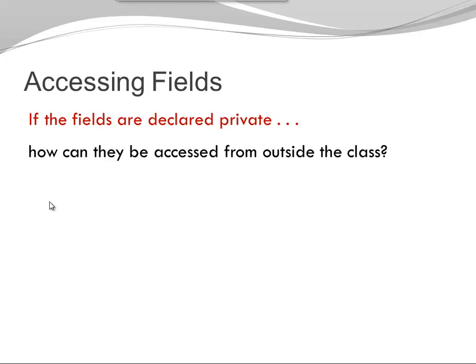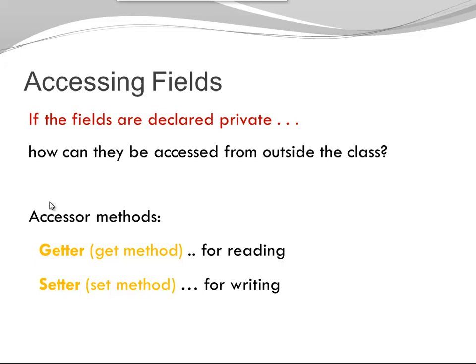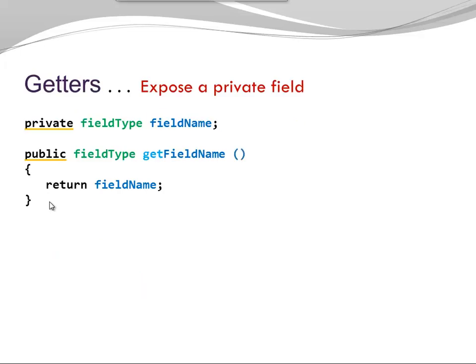Now of course the question is, if the fields are declared private, how can they be accessed from outside the class? There are two access methods that are very widely used: getters and setters. Getters are used for reading. They allow other classes to access the value of a field. Setters are used for writing. They allow other classes to modify the value of a field.